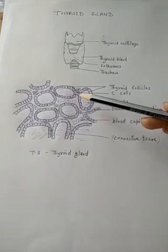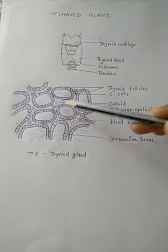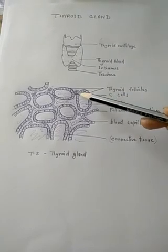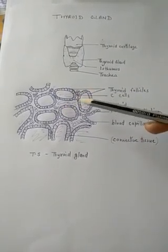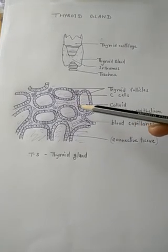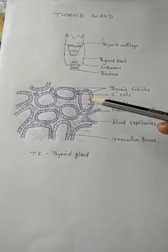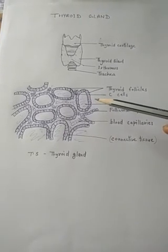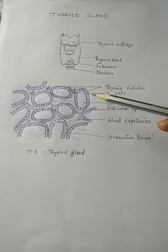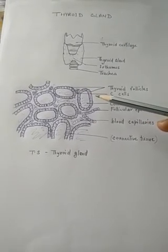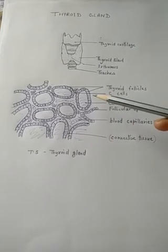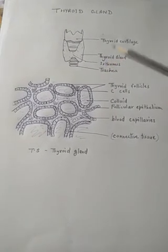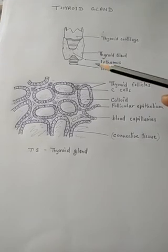Between the thyroid follicles there are cells called C cells, which can be present in groups or as single cells. These are also called parafollicular cells, and they secrete the hormone calcitonin, which helps regulate the level of calcium.